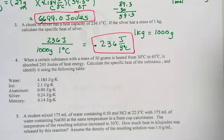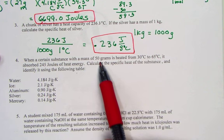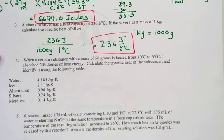In our next question, we are being asked when a certain substance has a mass of 50 grams and it is heated from 30 degrees to 65 degrees, it absorbs 245 joules of heat energy. Calculate the specific heat of the substance and then use the following table to give it its identity.